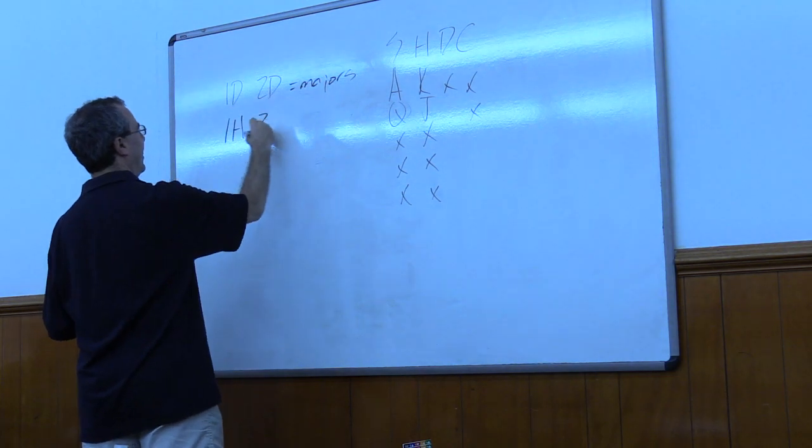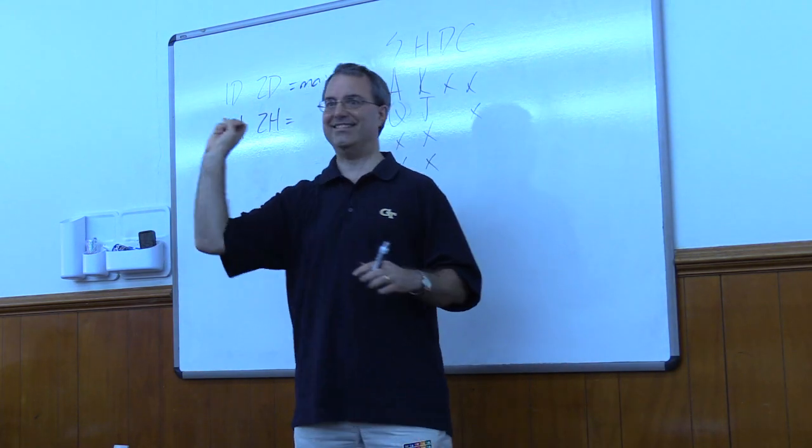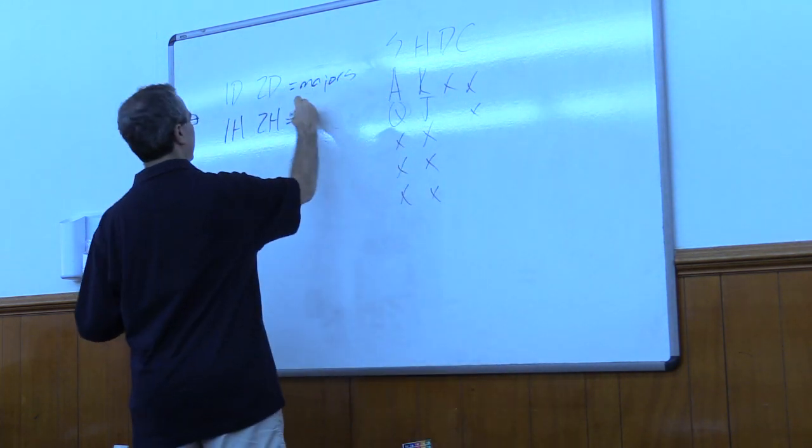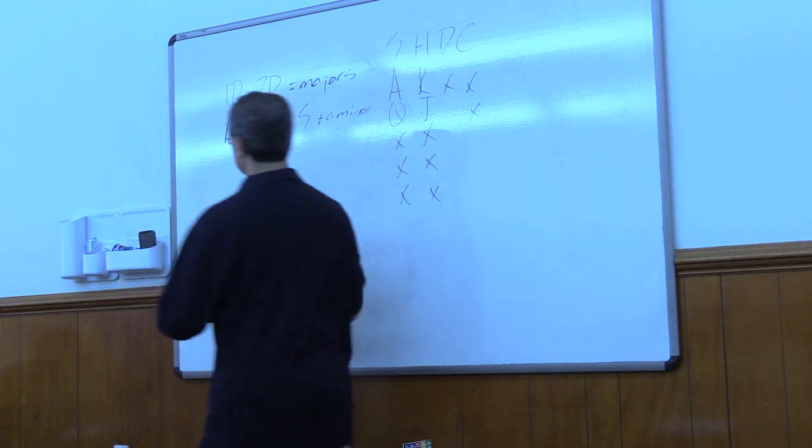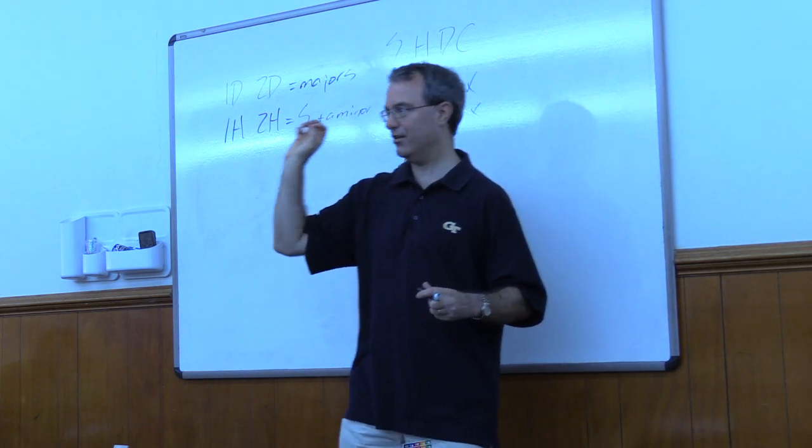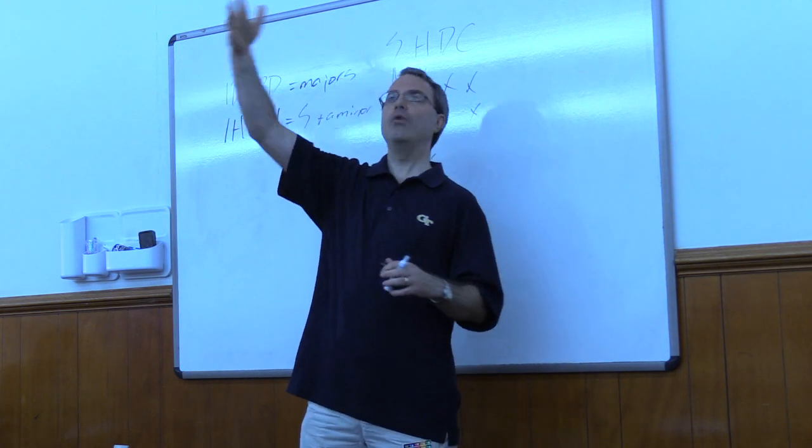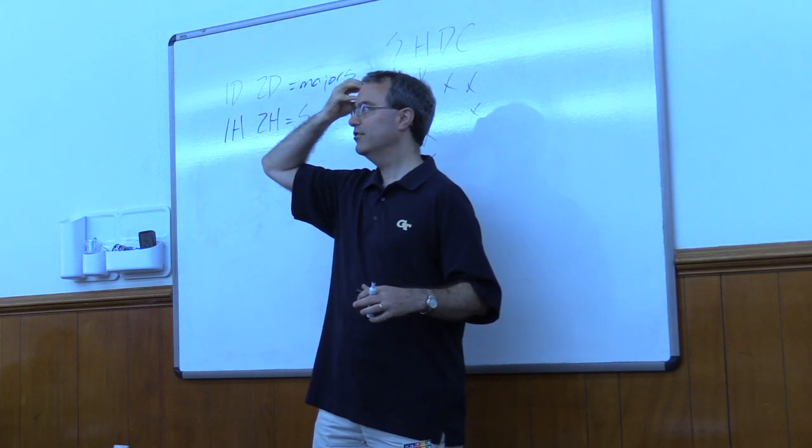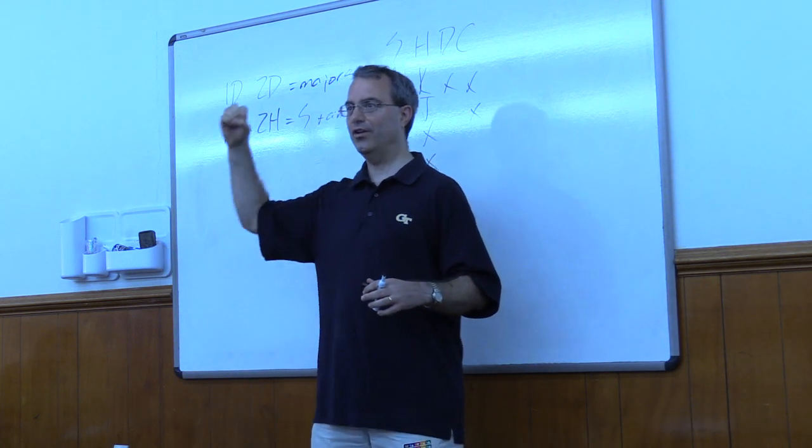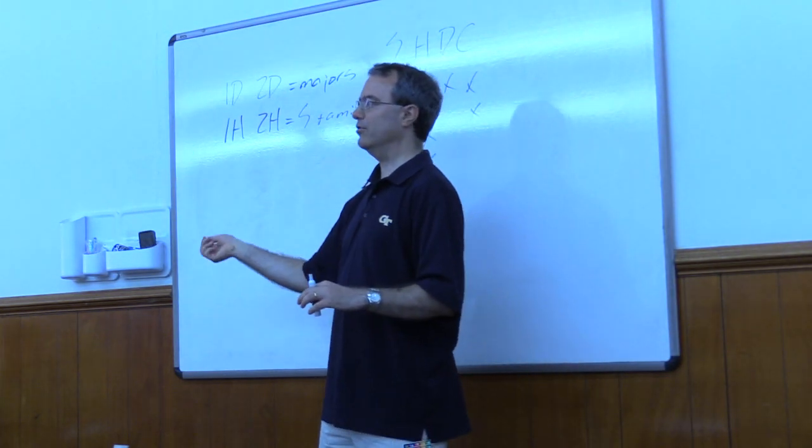If they open one heart and I say two hearts, I've got still, we're still playing Michaels cuebids. I still have a two suited hand with five cards in all the unbid majors. So this would be spades and all of them. One heart, two hearts. Partner, I've got a, I'm making a cuebid. And whoa. What's he doing? We've talked about this. He has a two suited hand with five cards in all of the unbid majors. So he's got spades and he's got another suit, which by definition is a minor.